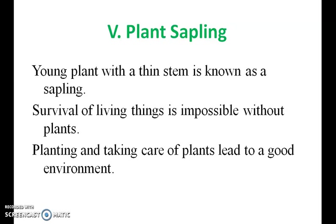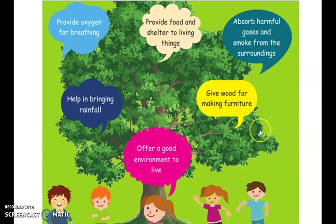Now we will see plant saplings. A young plant with a thin stem is known as a sapling. Survival of living things is impossible without plants. Planting and taking care of plants leads to a good environment. The benefits of trees include: they provide oxygen for breathing, provide food and shelter to living beings, absorb harmful gases and smoke from the surroundings, provide good air, give wood for making furniture, offer a good environment for living and help bring rainfall.